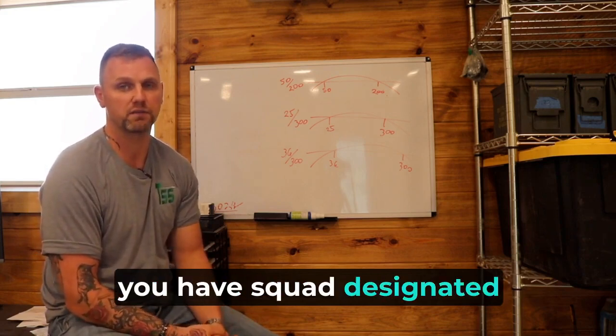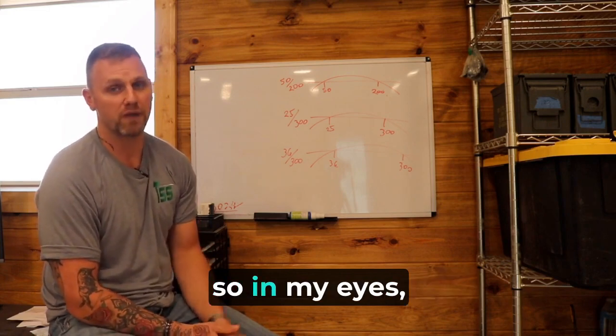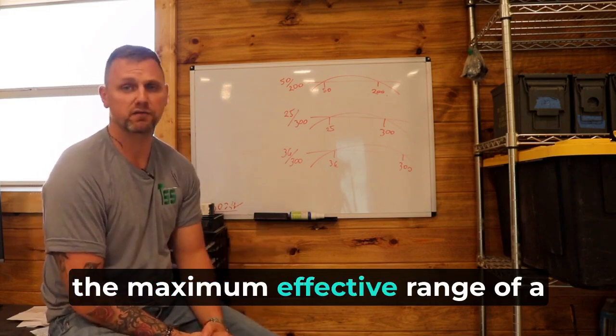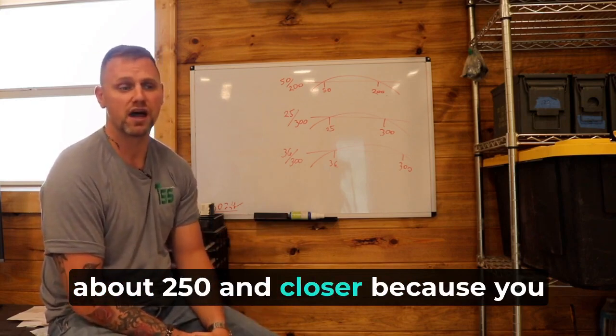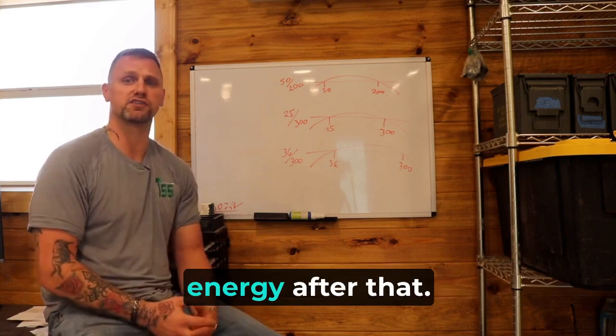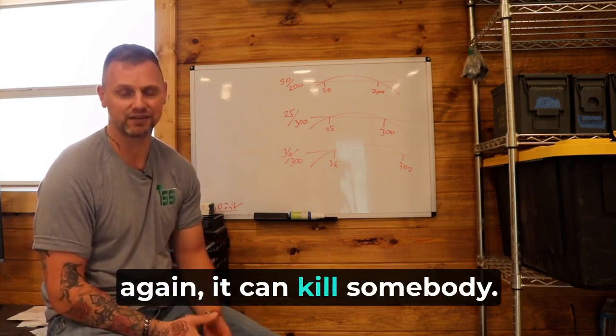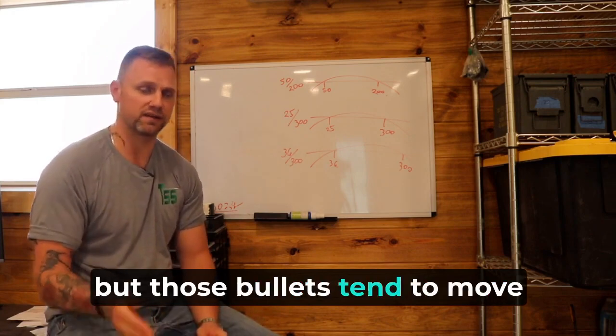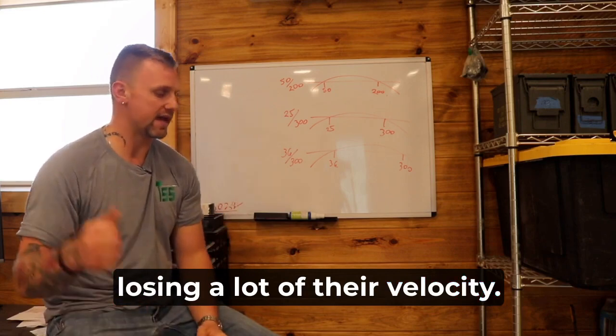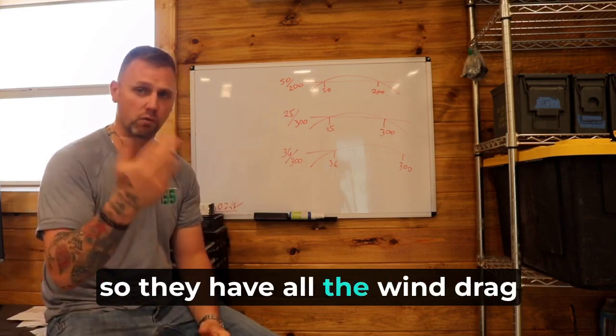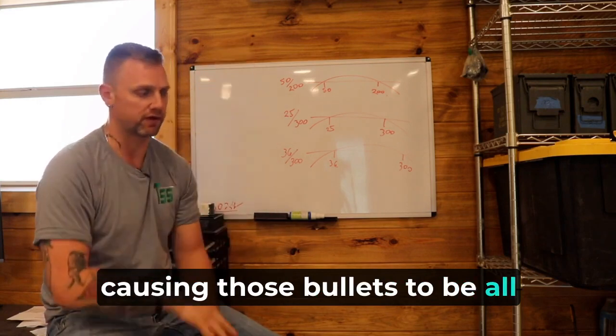Even if military, you have squad designated marksmen and snipers that do those longer shots. You're not doing those. So in my eyes, the maximum effective range of a 5.56 bullet is really about 250 and closer, because you just lose so much muzzle energy after that. It can kill somebody. But those bullets tend to move around a lot because they're losing a lot of their velocity and so they have all the wind drag and resistance and everything causing those bullets to be all messed up.